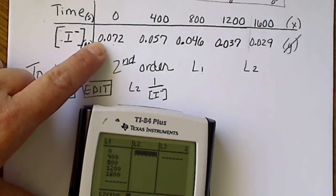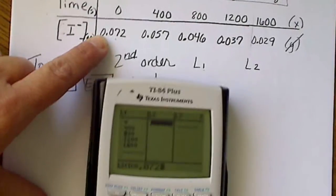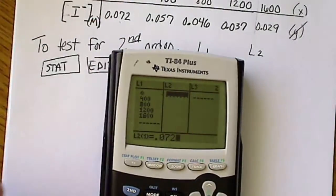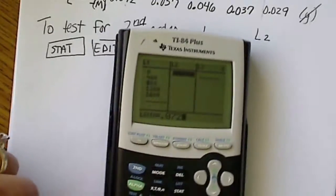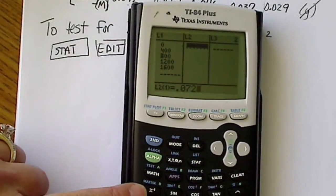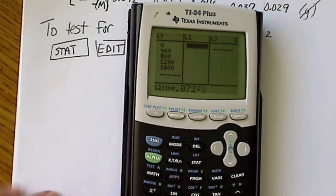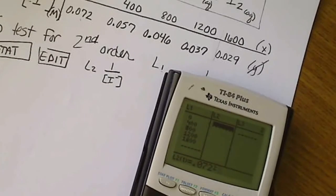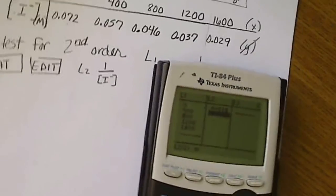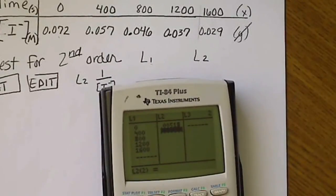If I take 0.072, and if I plug that in, the x to the minus 1 key takes the reciprocal of that number. So I take the reciprocal of that and enter it.